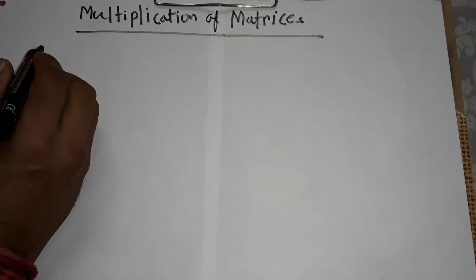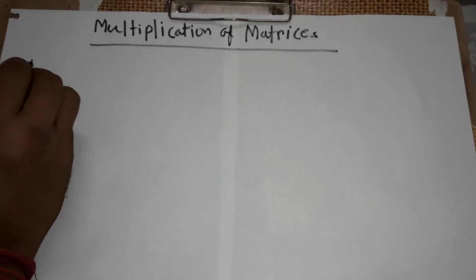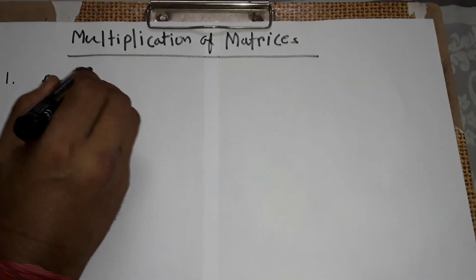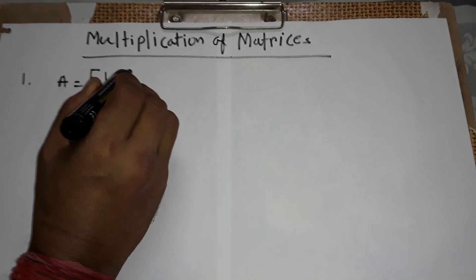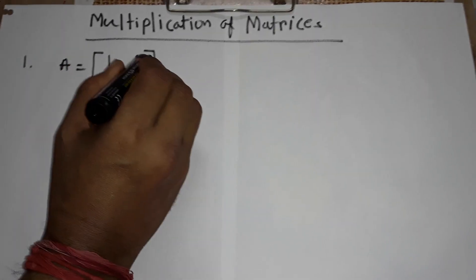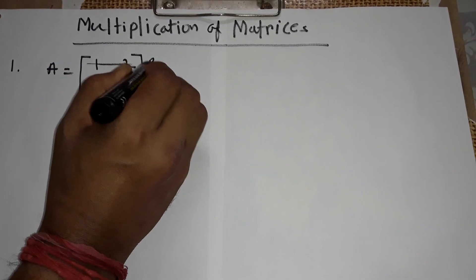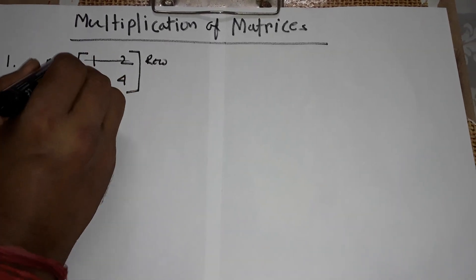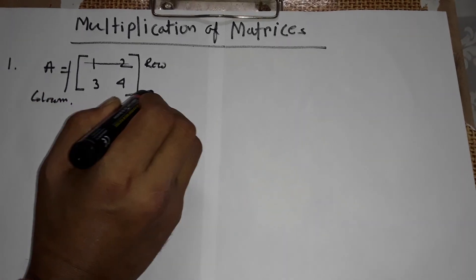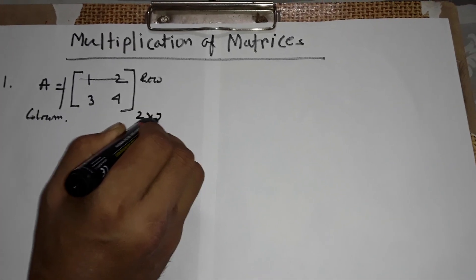Students, today I will discuss multiplication of matrices. Let A be a matrix with elements 1, 2, 3, 4. This is called row, and this is column. Its order is row into column, that means 2 into 2.